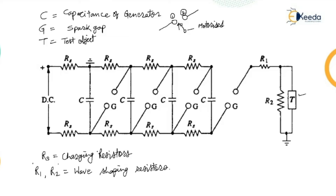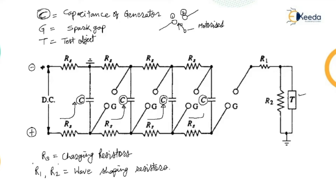As per the previous discussion, this particular capacitor is charged in parallel. Here I am considering four capacitors placed. Across these you can find four spark gaps. When the DC supply is applied — positive and negative — the capacitors charge in parallel. Each capacitor gets charged from the supply, charging to the value of the supply voltage V.